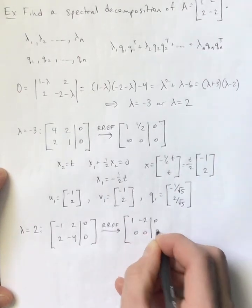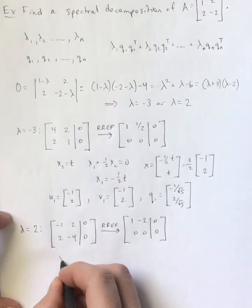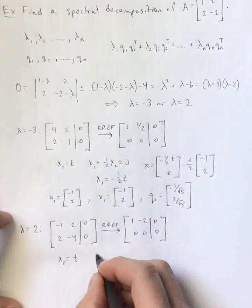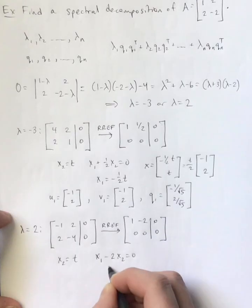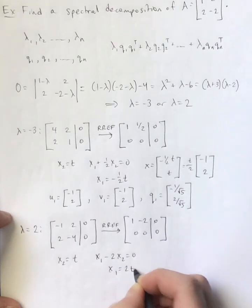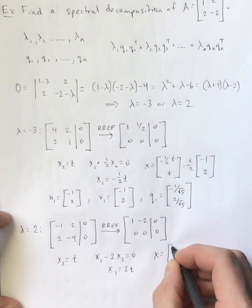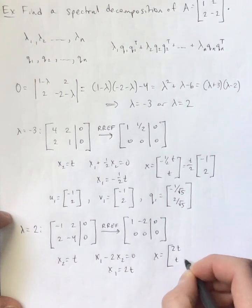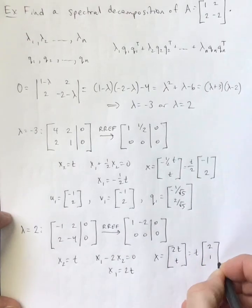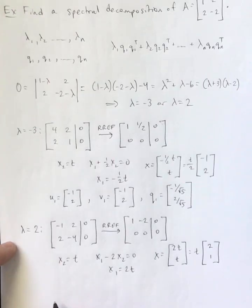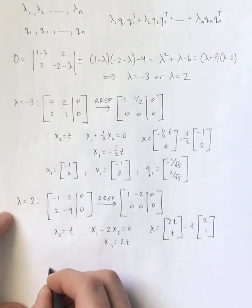And then if I just change the sign on the top row to get a leading 1, this is the RREF for that matrix. And so if I again have X2 be equal to T, then that equation is X1 minus 2X2 is 0, which makes X1 2T. So in this case, X is of the form 2T comma T. If we factor the T out, we have 2, 1. So again, there's just a single vector in that basis.